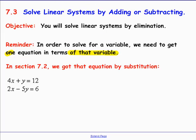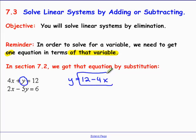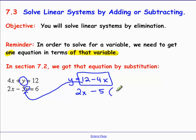I'm going to work out a quick substitution problem to remind you. In substitution, we found a variable that could be easily isolated — in this case, y. We got y = 12 minus 4x by subtracting 4x from both sides. Once we isolated y, we substituted it into the second equation, replacing y with 12 minus 4x. This gave us one equation with only one variable.